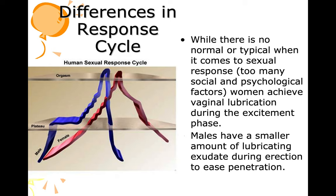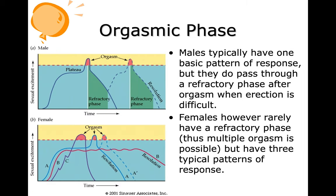There is no normal or typical when it comes to sexual response. Women achieve vaginal lubrication during the excitement phase; males have a smaller amount of lubricating exudate during erection to ease penetration. Males typically have one basic pattern of response but pass through a refractory phase after orgasm when erection is difficult. Females rarely have a refractory phase, making multiple orgasms possible. Females have three typical patterns of response.